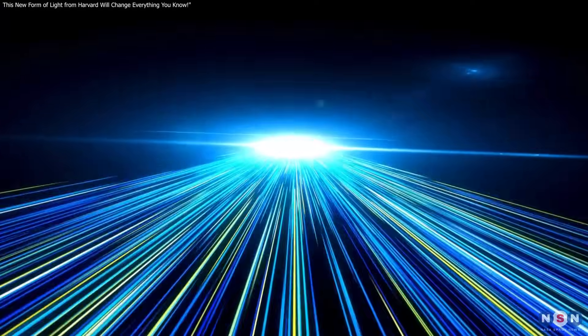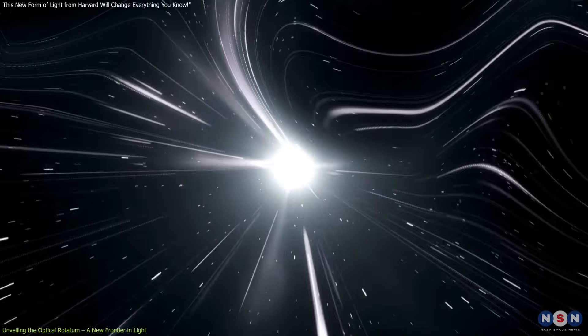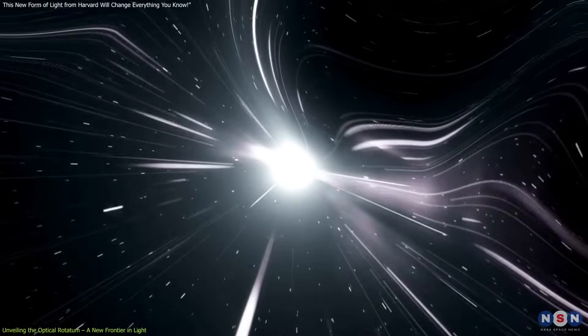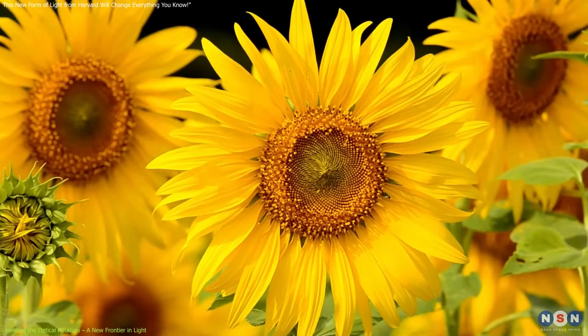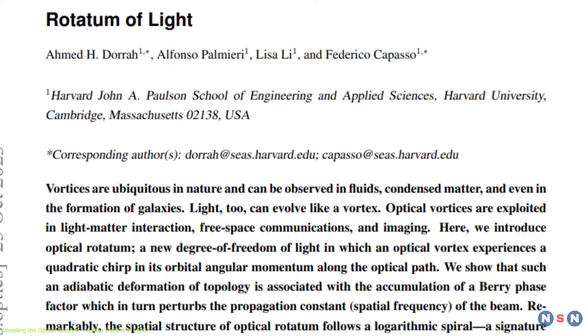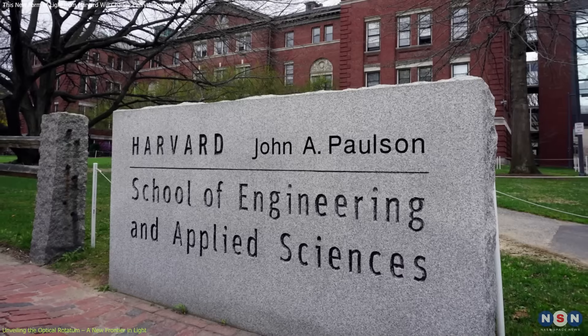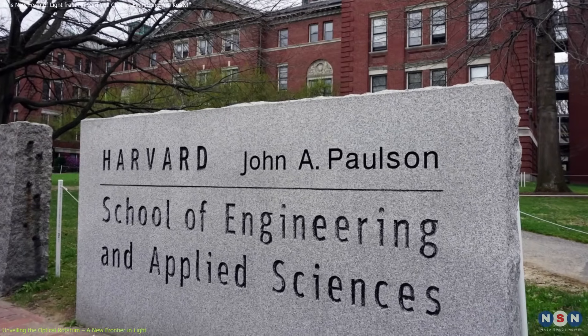Imagine a beam of light that doesn't just travel in a straight line or even in a simple spiral, but instead twists and evolves in a pattern reminiscent of the spirals found in nature, like those in nautilus shells or sunflower seeds. This is the essence of the optical rotatum, a groundbreaking discovery by researchers at Harvard's John A. Paulson School of Engineering and Applied Sciences.